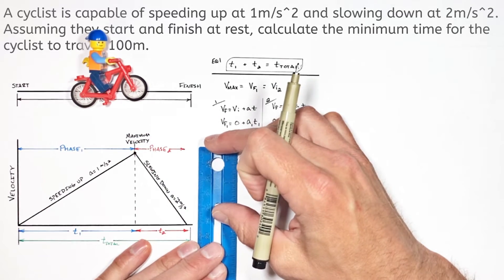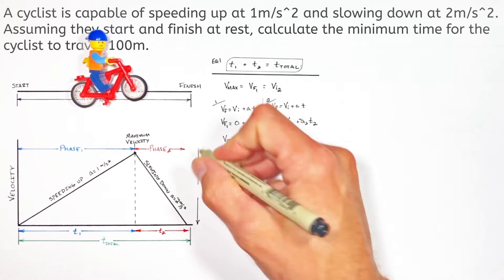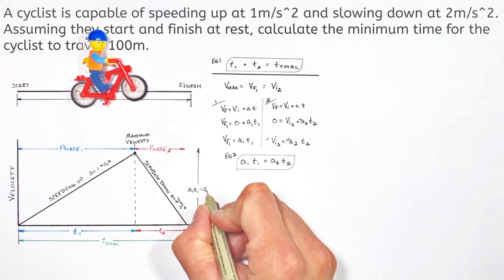Now going back to our graph, you'll notice these values A1, T1, or A2, T2 are actually the maximum magnitude or height on our velocity versus time graph.